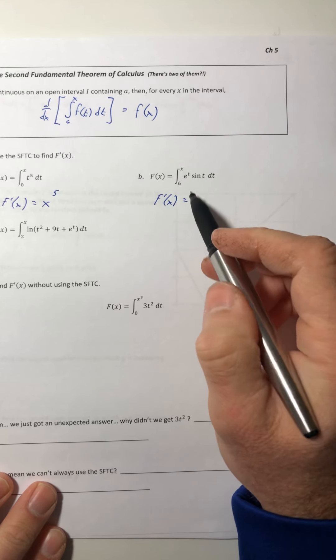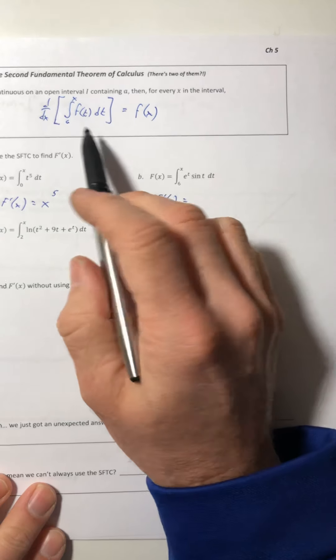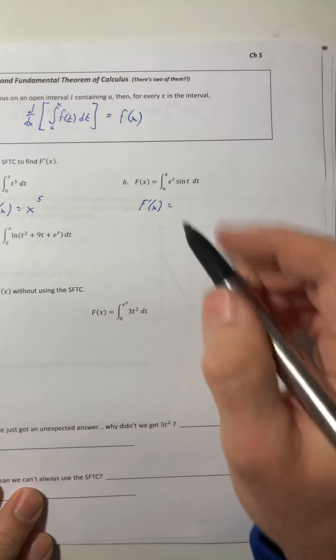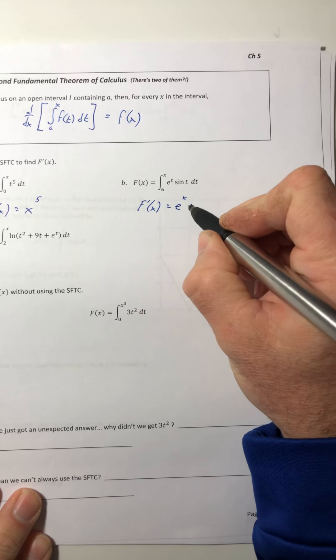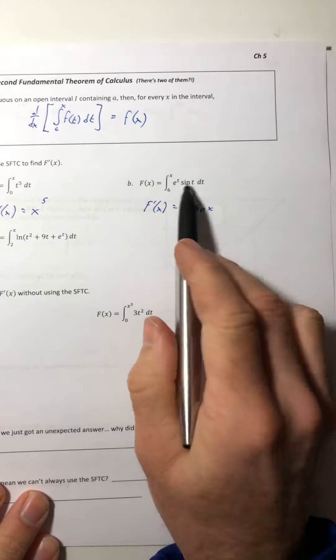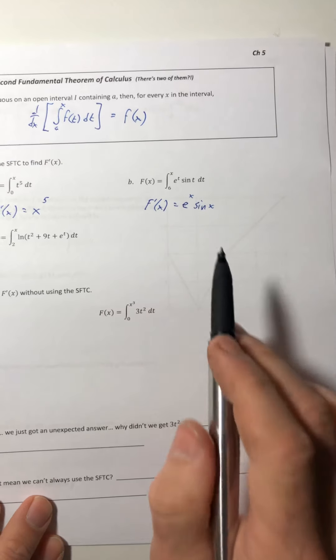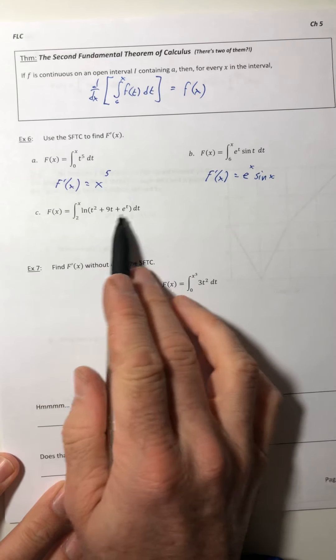Alright, part b. It's a little bit more complex of a function, but have no fear, we can use that theorem. So e to the x times sine of x. And that was really fortunate because we don't know how to integrate this guy out just yet. You'll see that in calculus two.